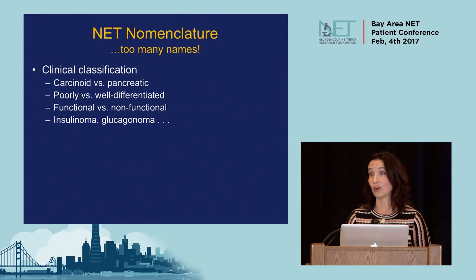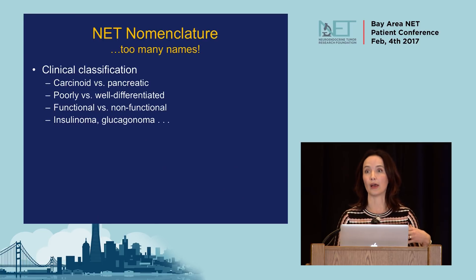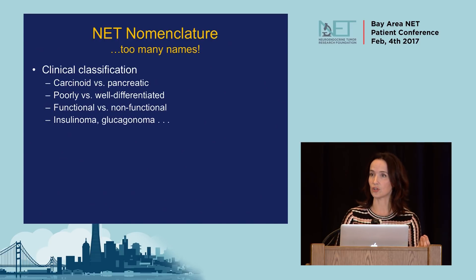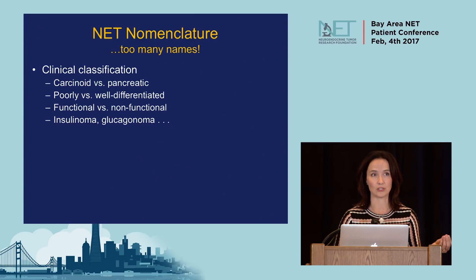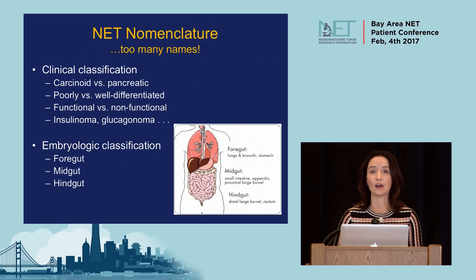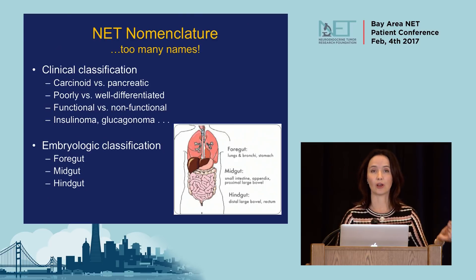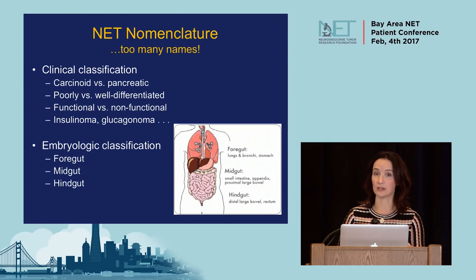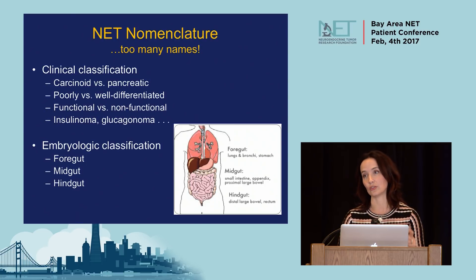There are too many names for describing neuroendocrine tumors. Some older classifications describe them as carcinoid versus pancreatic, or by how fast they grow — well versus poorly differentiated — or whether they secrete hormones. Functional tumors secrete hormones; non-functional do not. They can also be named by the hormone secreted, like an insulinoma or glucagonoma. Occasionally they're classified by embryological origin: foregut includes lungs and stomach; midgut includes small intestine, appendix, and beginning of the large intestine; hindgut includes the large intestine and rectum.